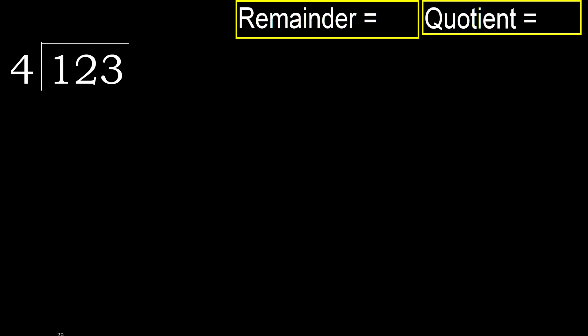123 divided by 4. 1 is less, therefore next. 12 is not less, therefore with 12: 4 multiplied by which number is nearest to 12 but not greater?